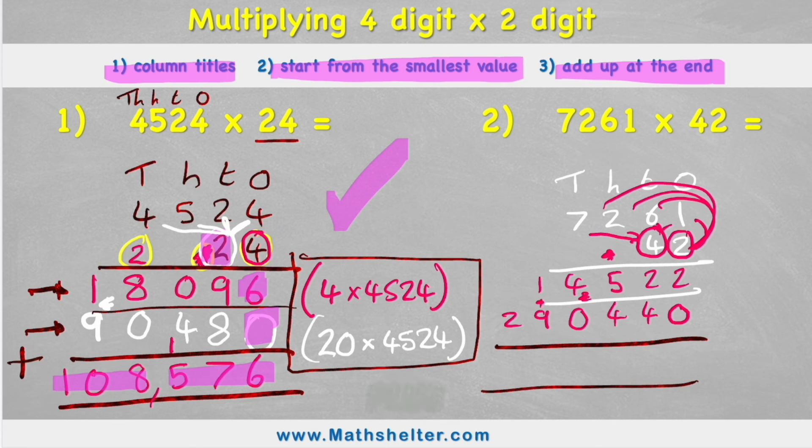Start in the 1s column. 2 plus 0 is 2. 2 plus 4 is 6. 5 plus 4 is 9. 4 on its own is 4. 1 plus 9 is 10. 2 plus the 1 is 3. So my answer to 7,261 times 42 is 304,962.